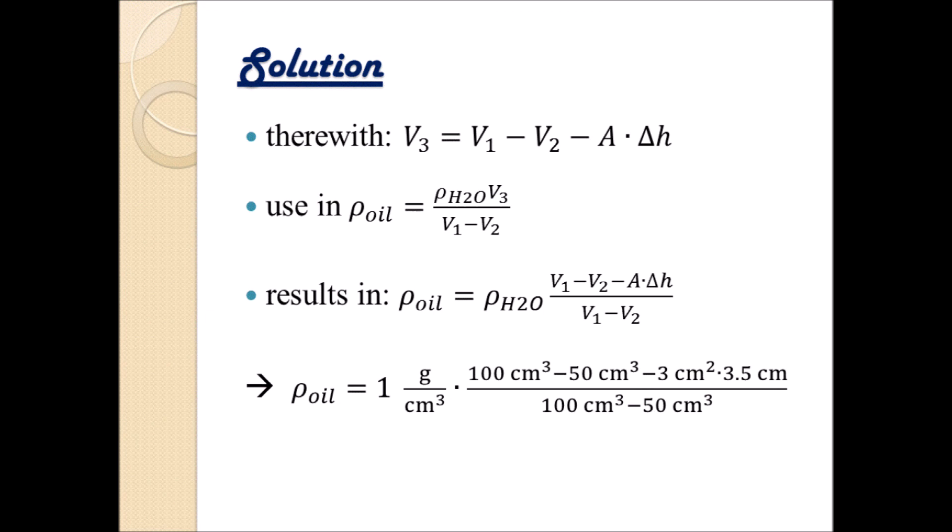So we can take all our given values, put them into a calculator, and what we get is that, in the present case, the density of oil equals 0.79 gram per centimeters cubed.